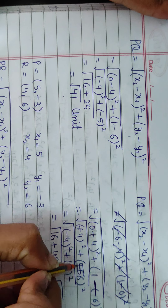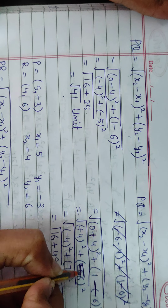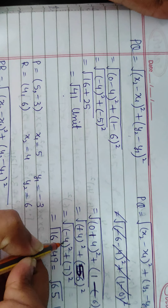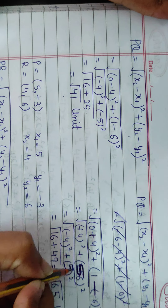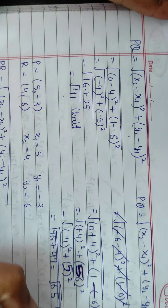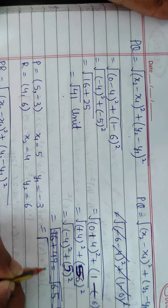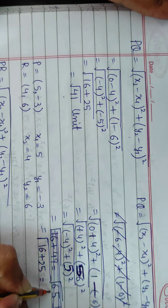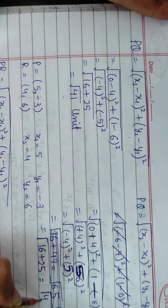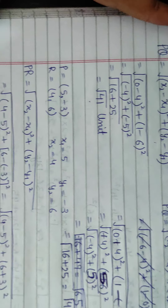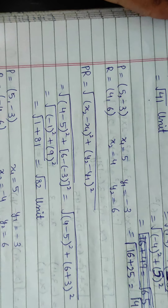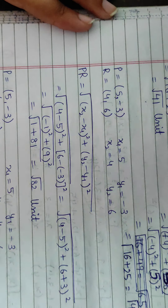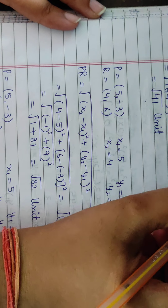Verifying: (0 - 4)² + (1 - 6)² = 4² + 5² = 16 + 25 = 41. So the distance QR = √41. Good. Now we need to find the other distance PR as well.